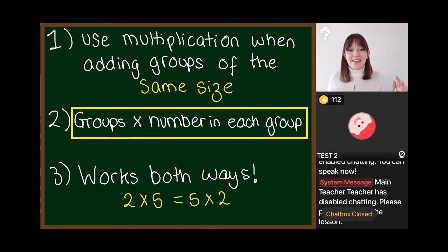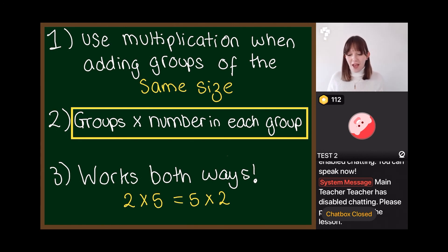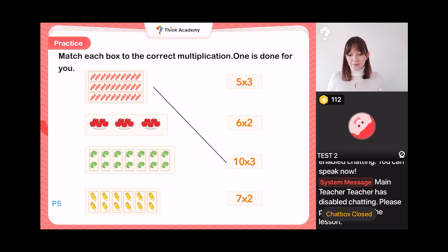The third thing we learned is that it works both ways — it doesn't matter which way round we write our sum. Two times five is exactly the same as five times two. So let's have some more practice of our multiplication sums.